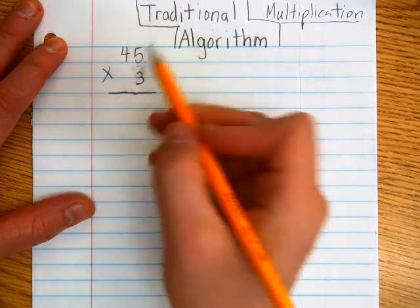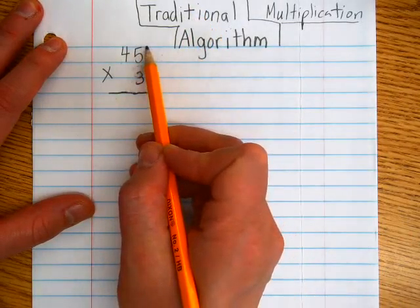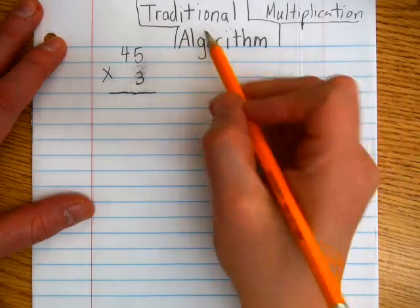Okay, so today we're looking at multiplication using the traditional algorithm. This is two-digit by one-digit multiplication.